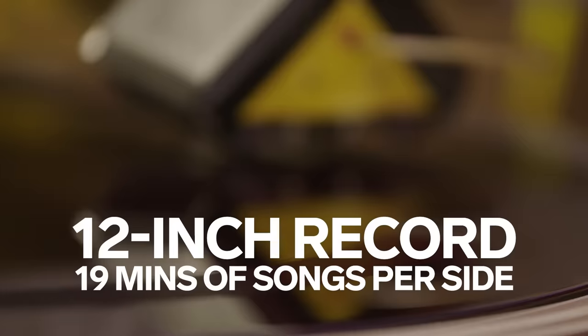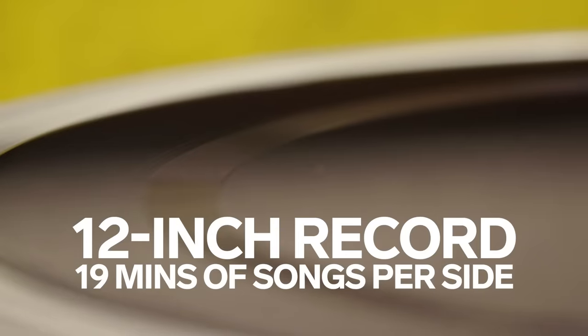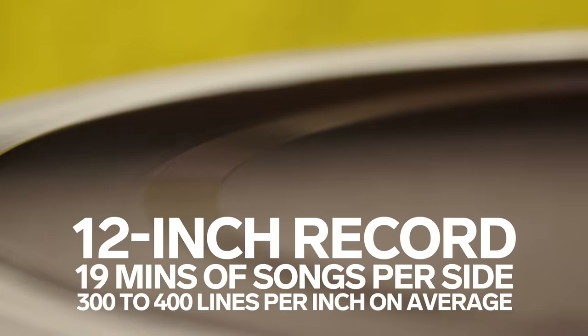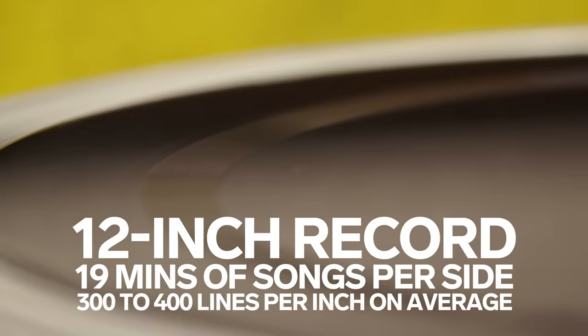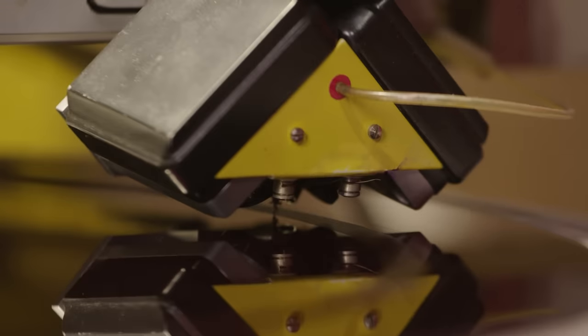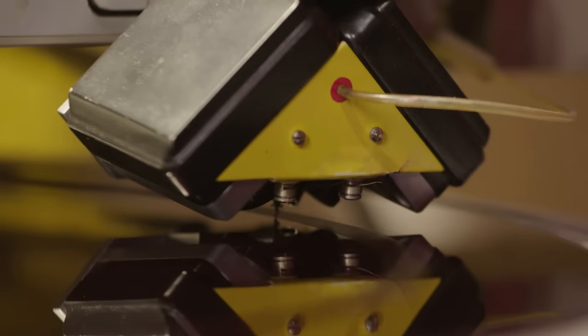A 12-inch record has about 19 minutes of songs per side. That equals about, on average, 300 to 400 lines per inch with small grooves per side. The grooves create a sound as the stylus moves back and forth and up and down, creating vibrations.